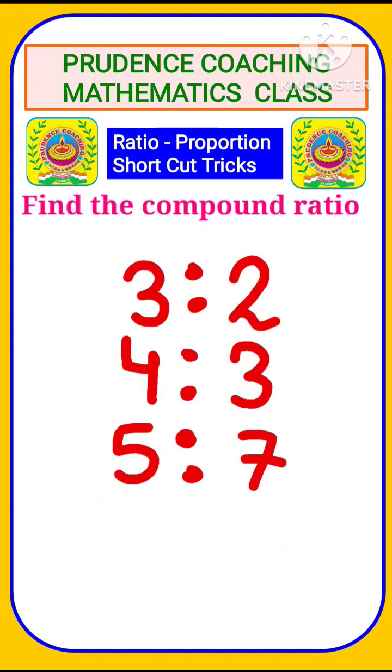So here you are asked to find out the compound ratio of 3 is to 2, 4 is to 3, and 5 is to 7. What is the meaning of the word compound ratio and how are you going to find out?